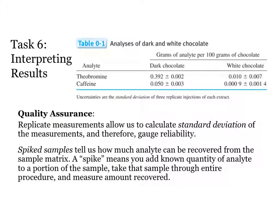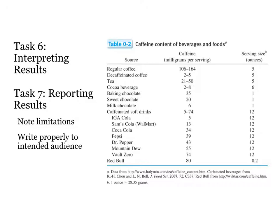In order to judge the validity of our results, we need some quality assurance information to accompany the data. At a minimum, this usually means we calculate the standard deviation of the measurements. We'll discuss more robust methods of adding quality assurance data to our analysis later in the semester, such as by adding spikes to our samples to evaluate the recovery of the analytes using our method. Finally, we need to compare our data to available information so that we offer at least a minimal interpretation of our results. How does our chocolate sample compare to other sources of caffeine in food? Did we answer all of the questions we started out with? Is further research necessary to answer lingering questions or new questions generated as a result of the analysis?